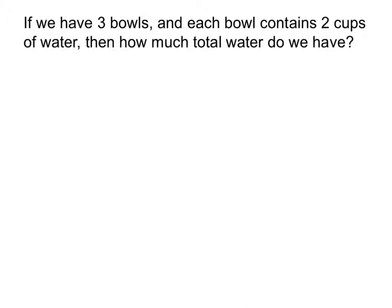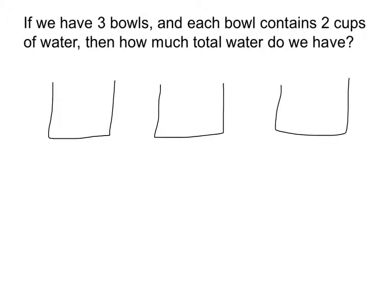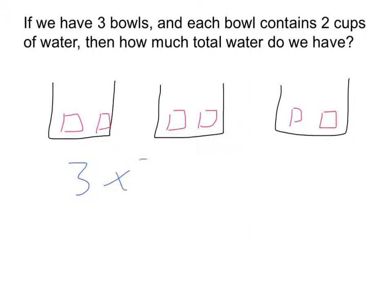Let's draw a simple picture to illustrate this. We draw three bowls — one, two, three — and in each bowl we put two cups of water. I'll draw a box to represent a cup, so there are two cups in each bowl. We see that we have three groups, and each group contains two items. By our meaning of multiplication, we take three times two and get six cups.